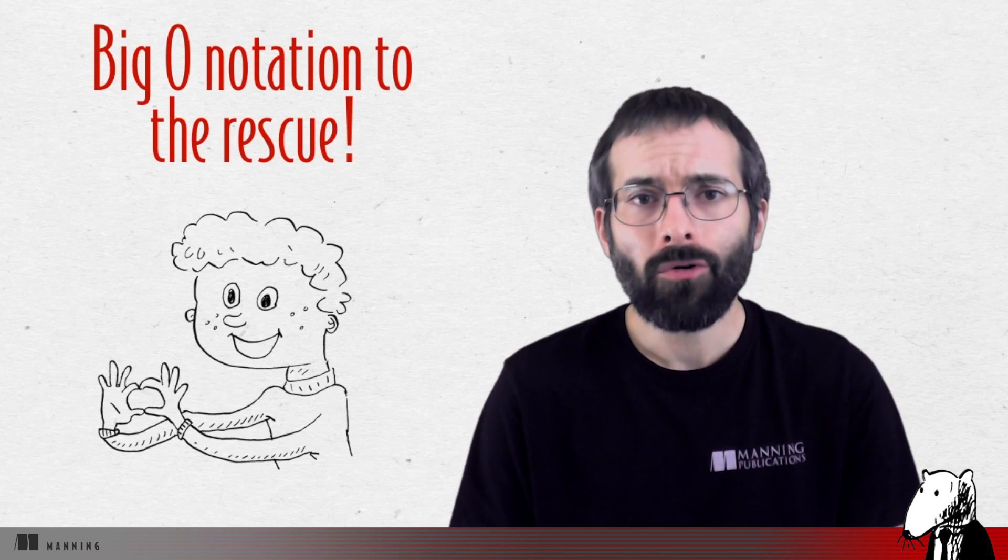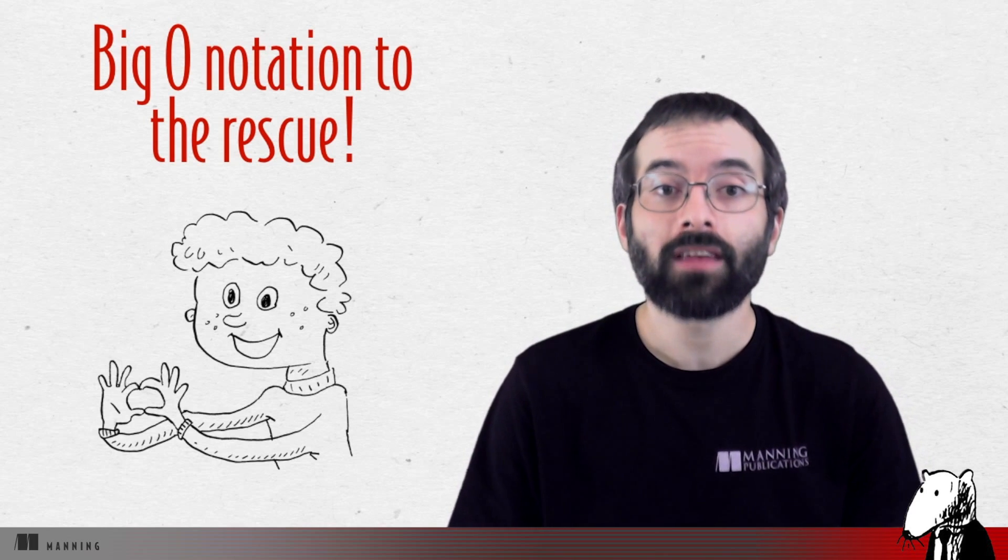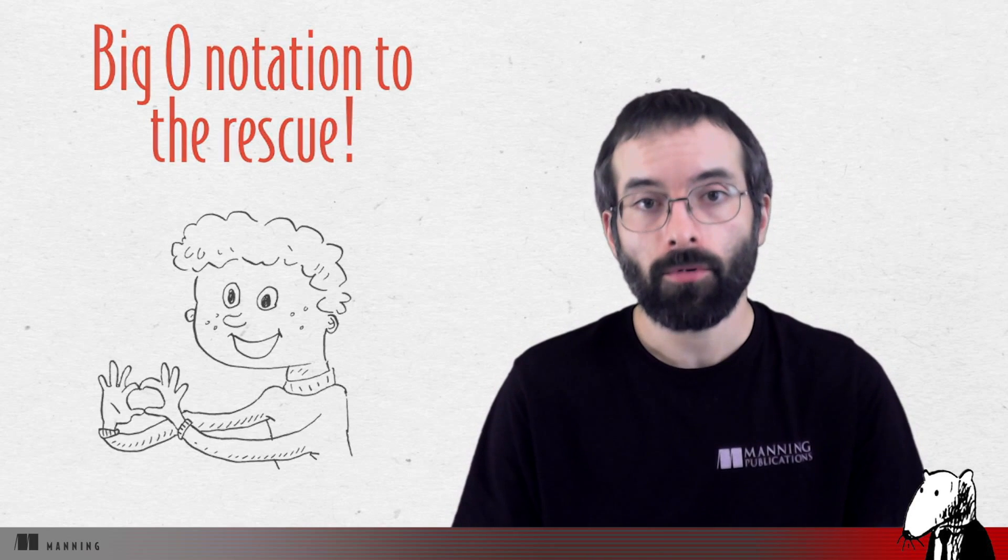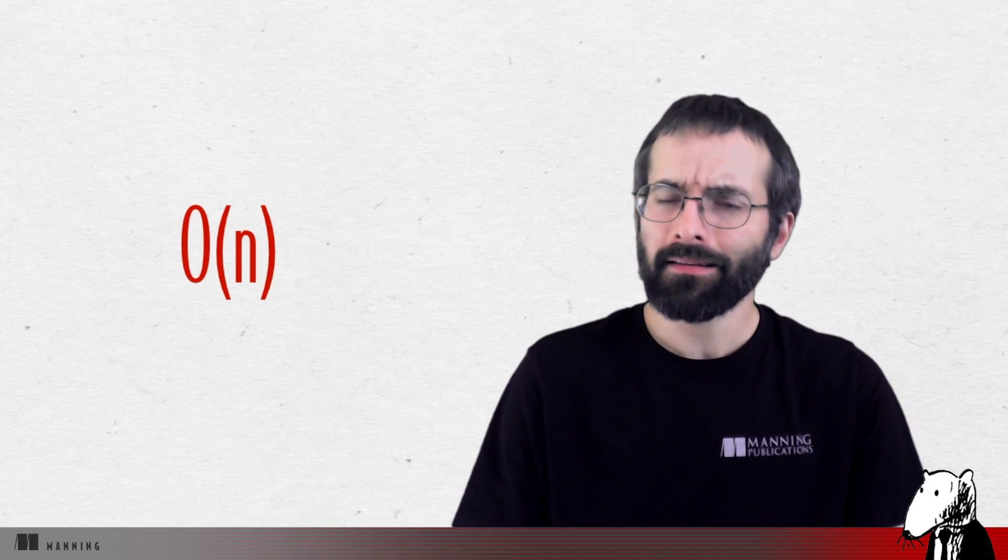That's where big O notation comes in. Big O notation tells you how fast an algorithm is. And this guy is making a big O with his fingers. Here's an example. Suppose you have a list of size n. Simple search needs to check each element, so it will take n operations. The runtime in big O notation is O of n. How many seconds is that?